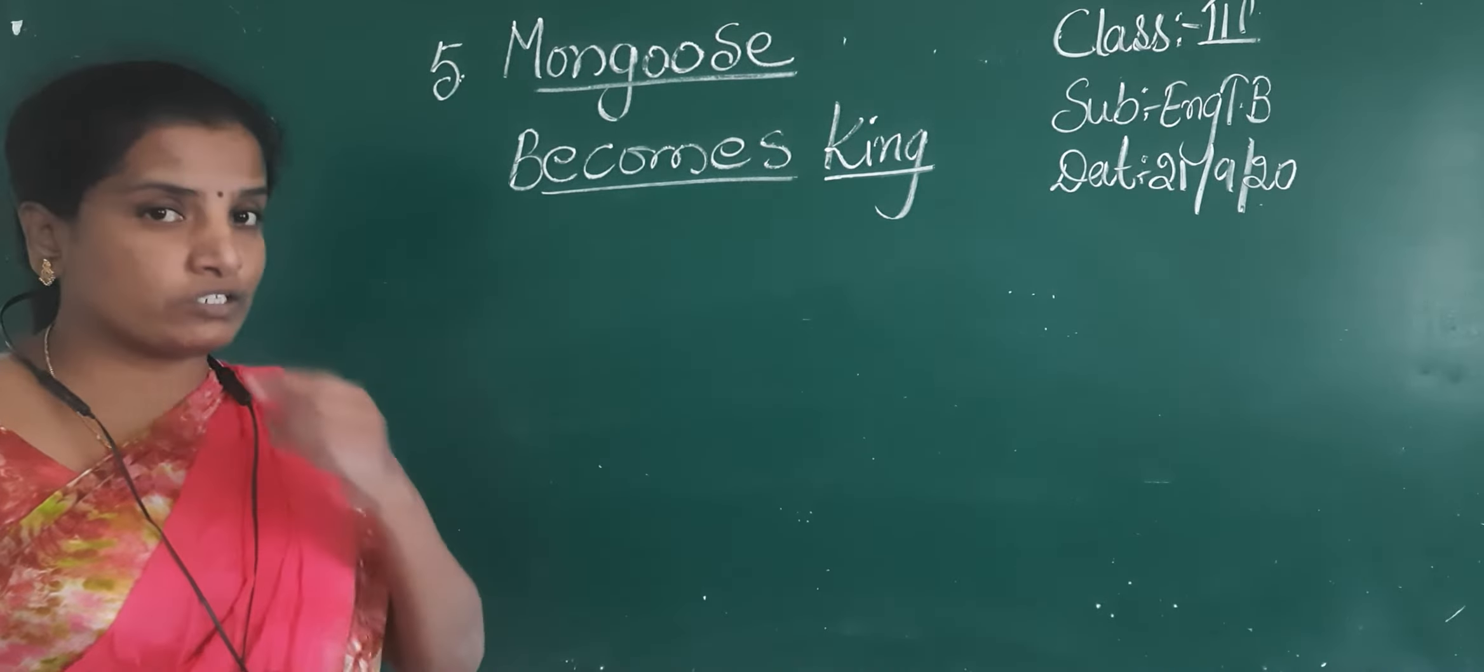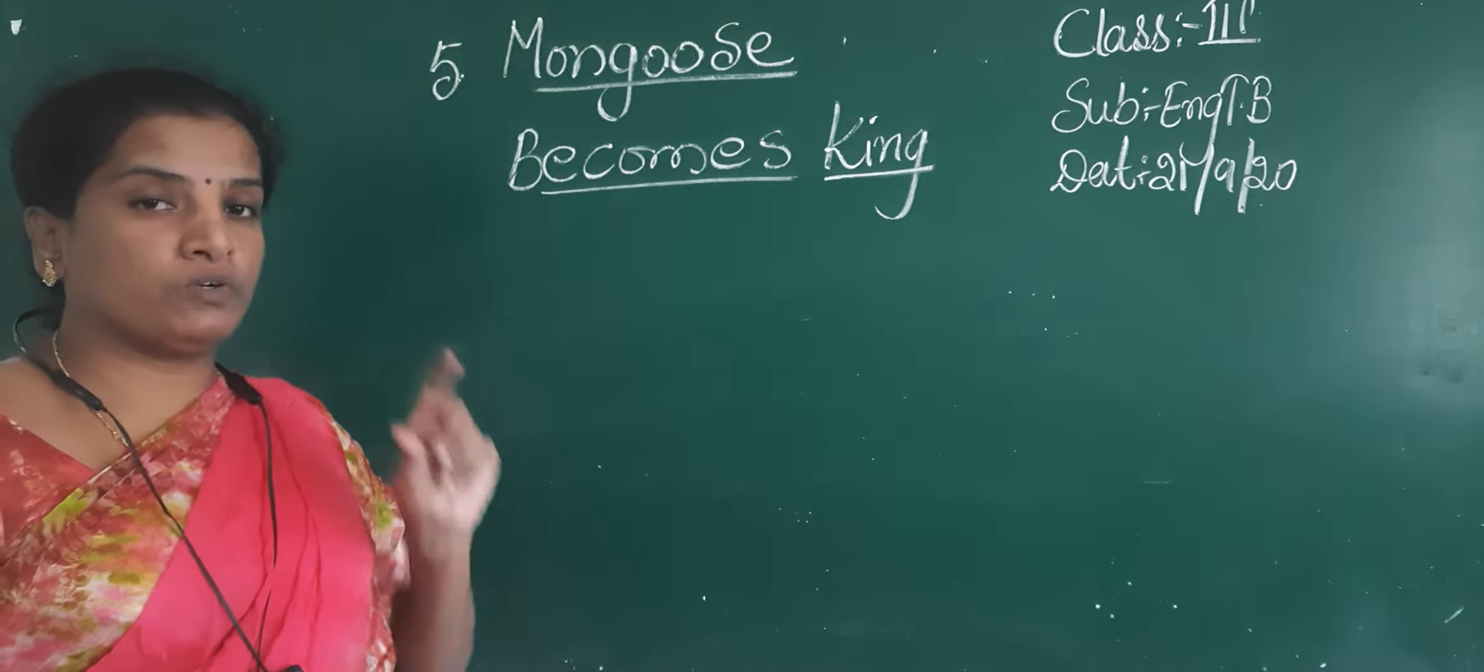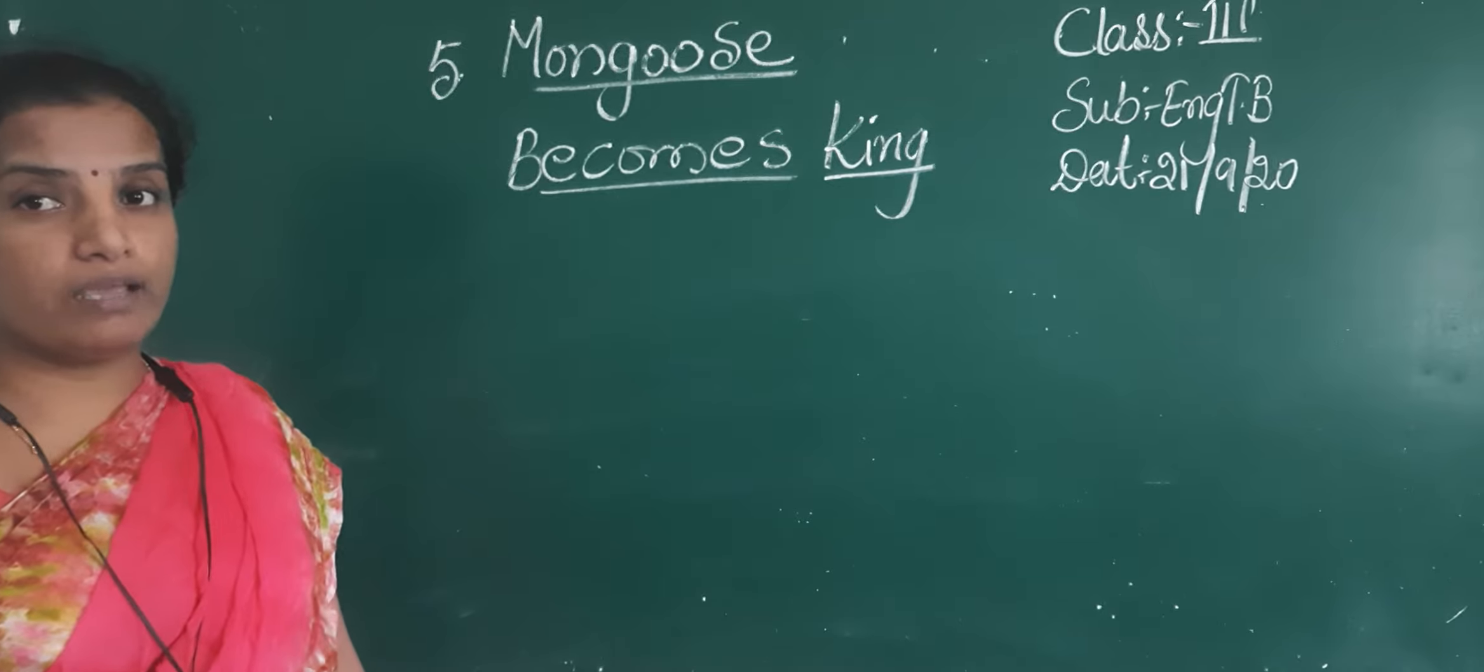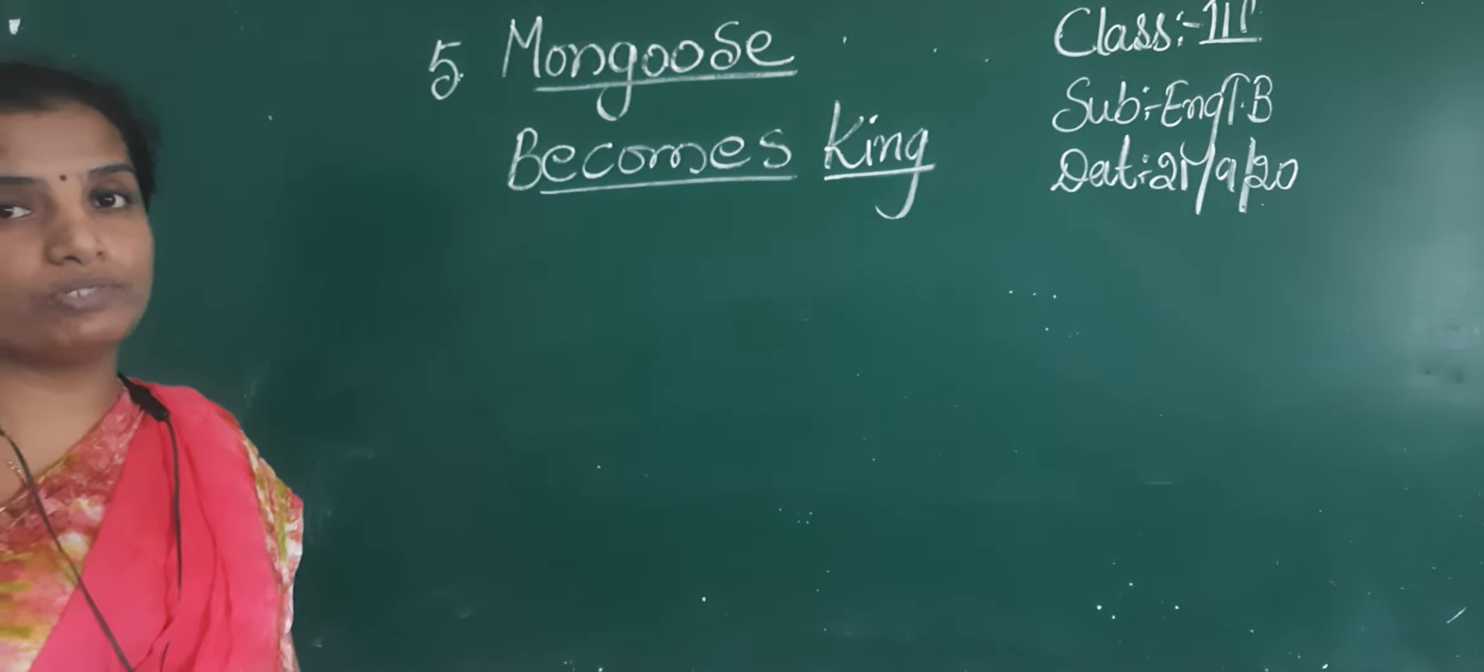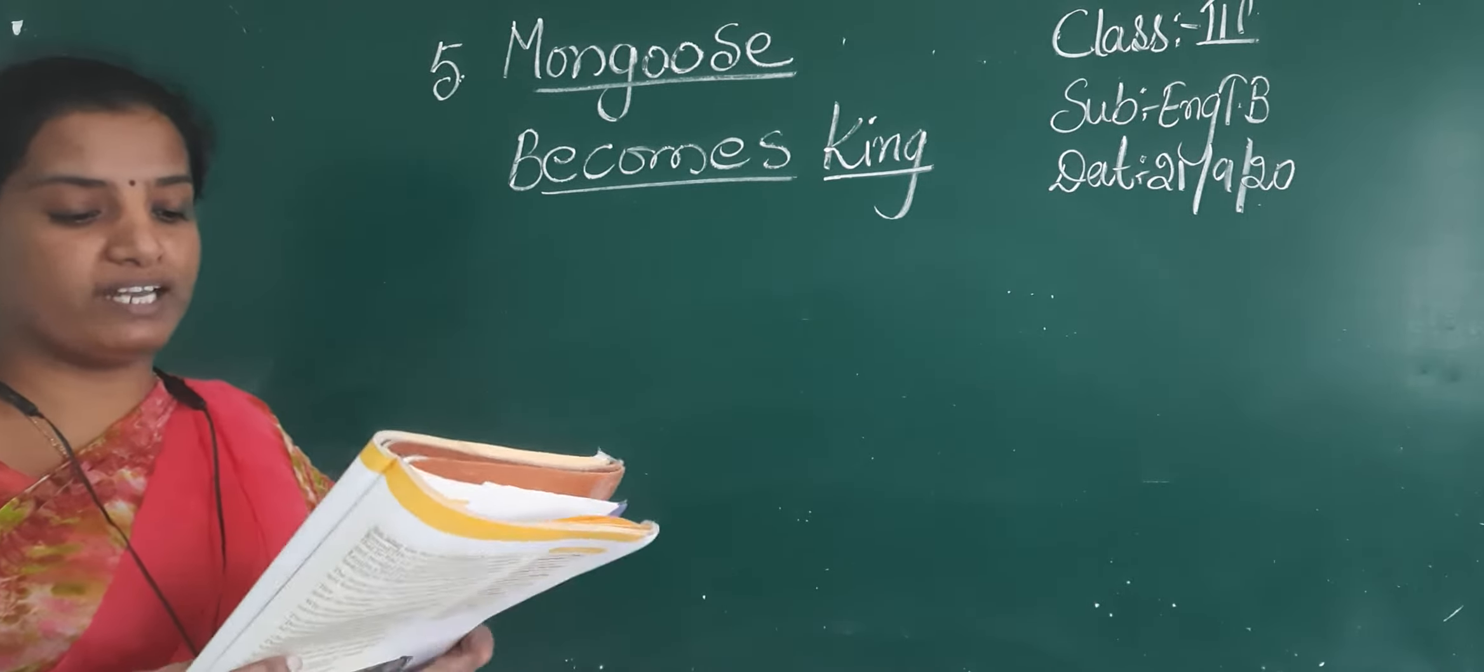But whenever you are reading the story children, make it sure that for every story you should circle the naming words. Okay, naming words. Nouns you have to circle for the entire chapter. Now see, coming to the textbook.